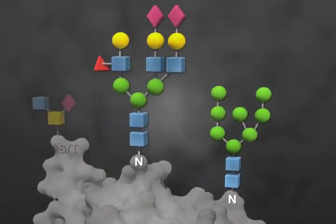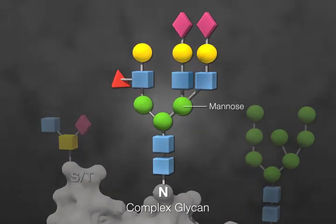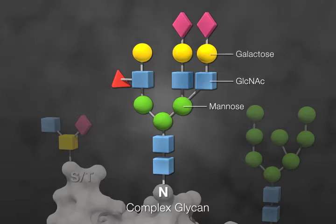N-glycans can also be complex, which means the mannose residues are only present at the core and the branches are extended with other monosaccharides, such as N-acetylglucosamine or GlcNAc, galactose, sialic acid, and fucose.